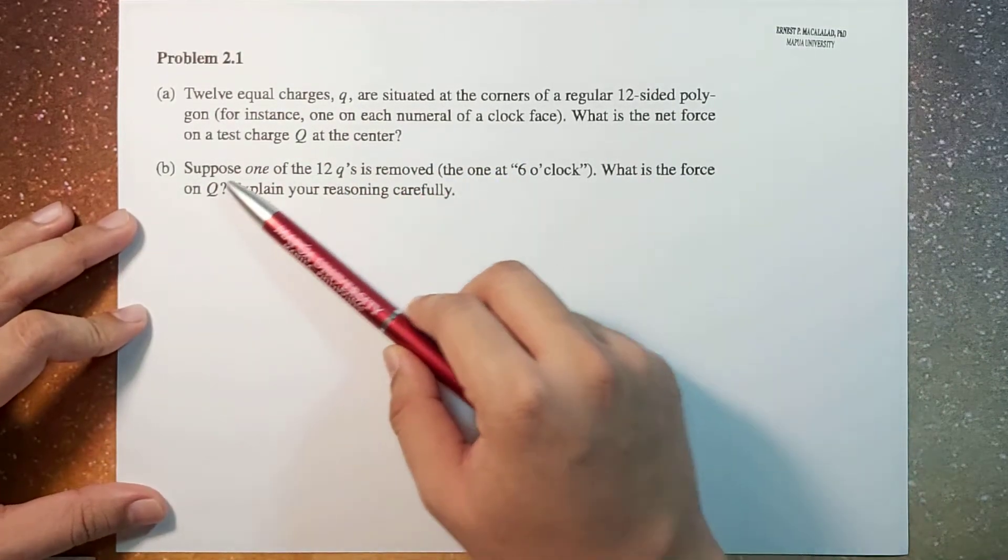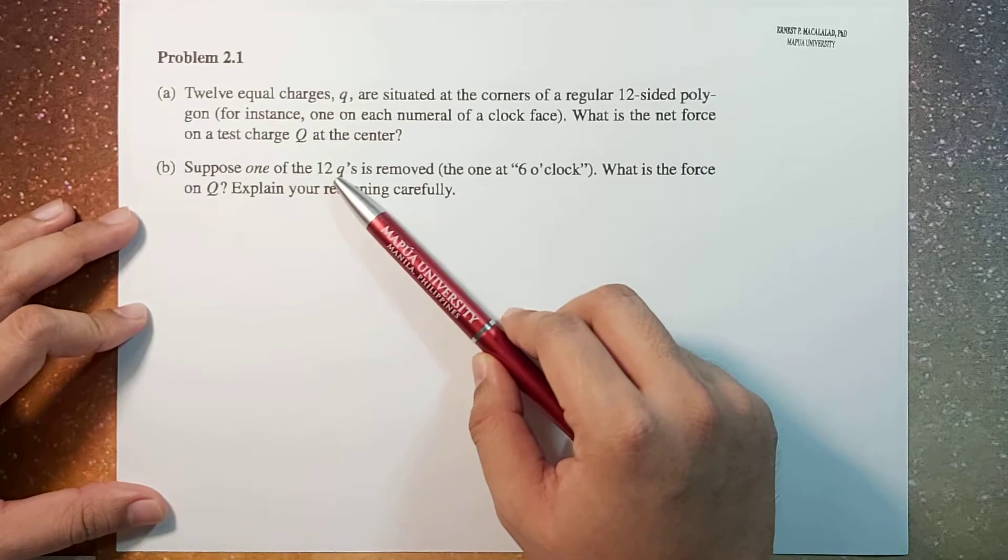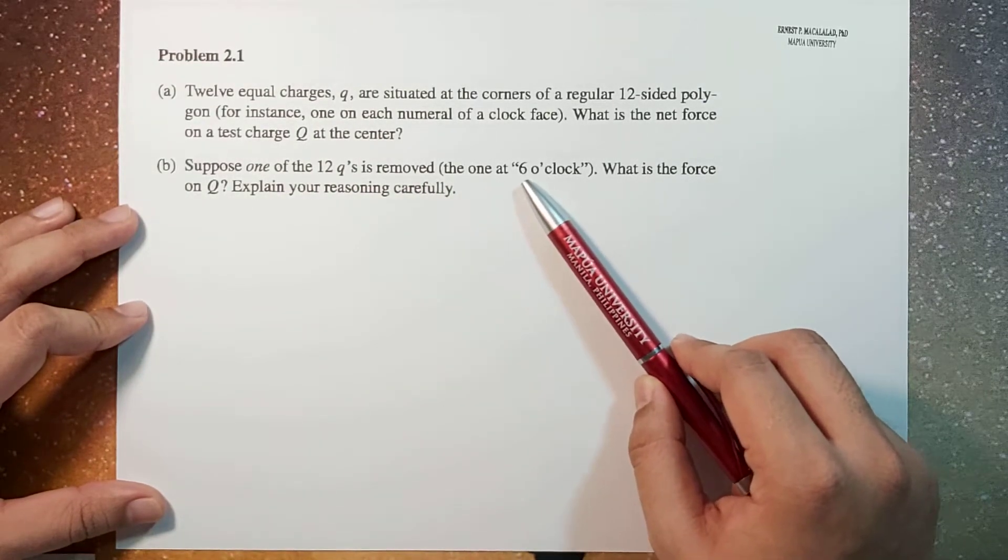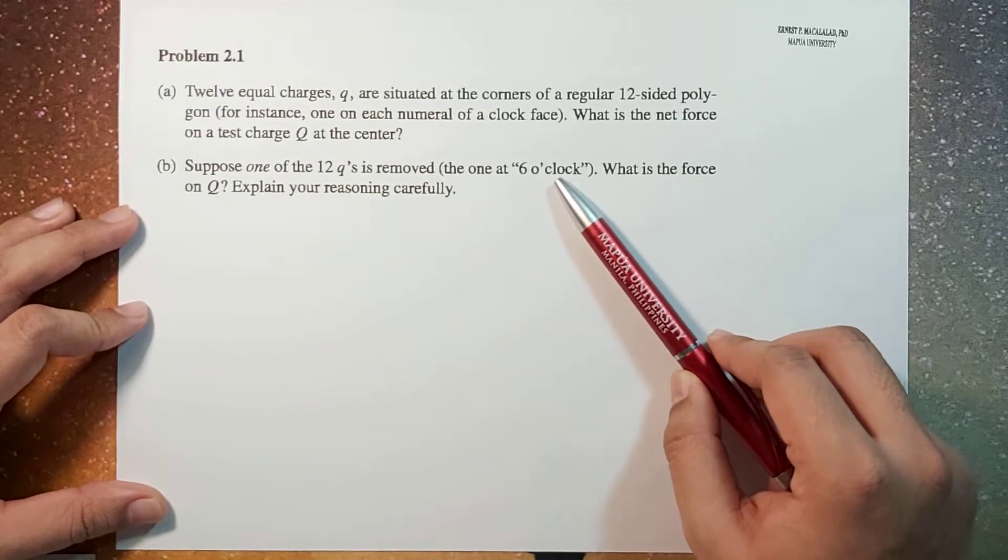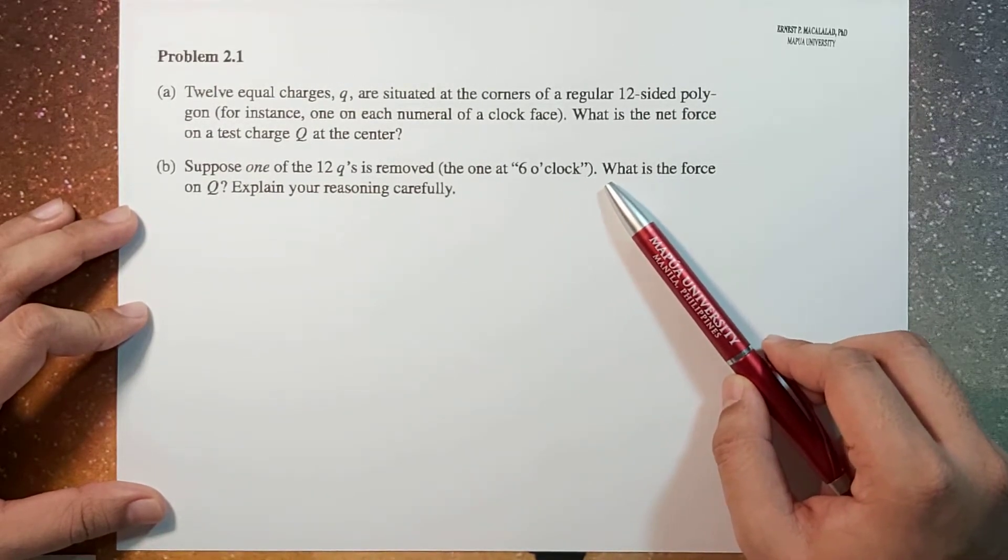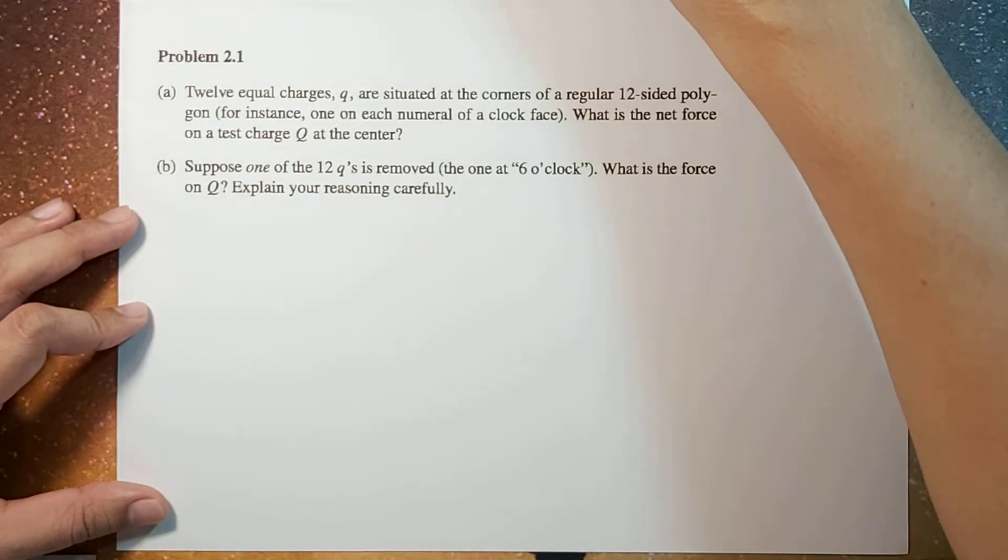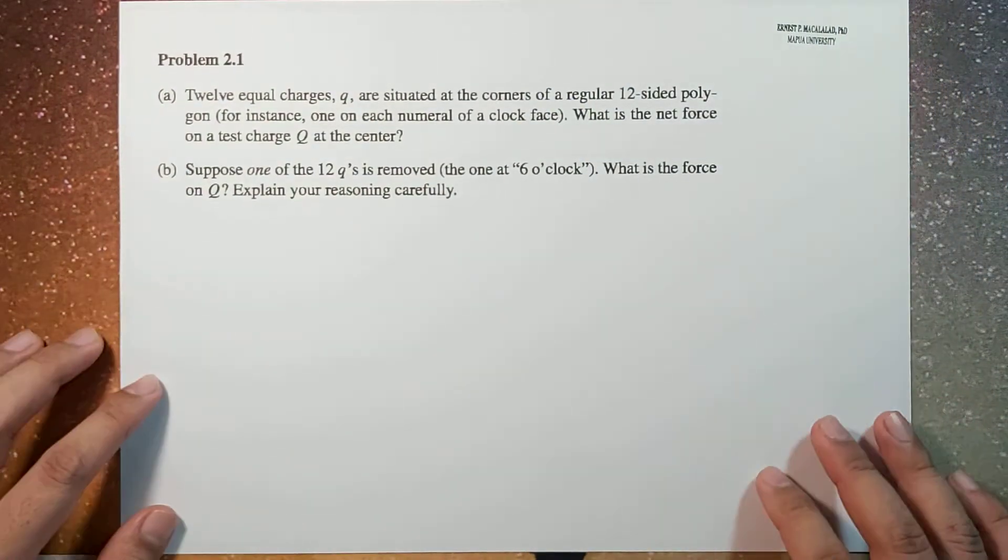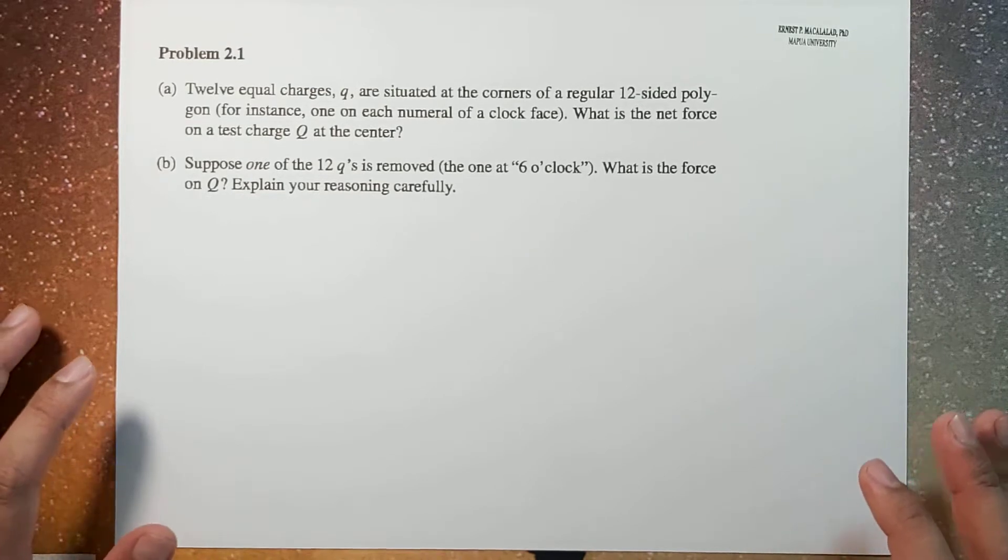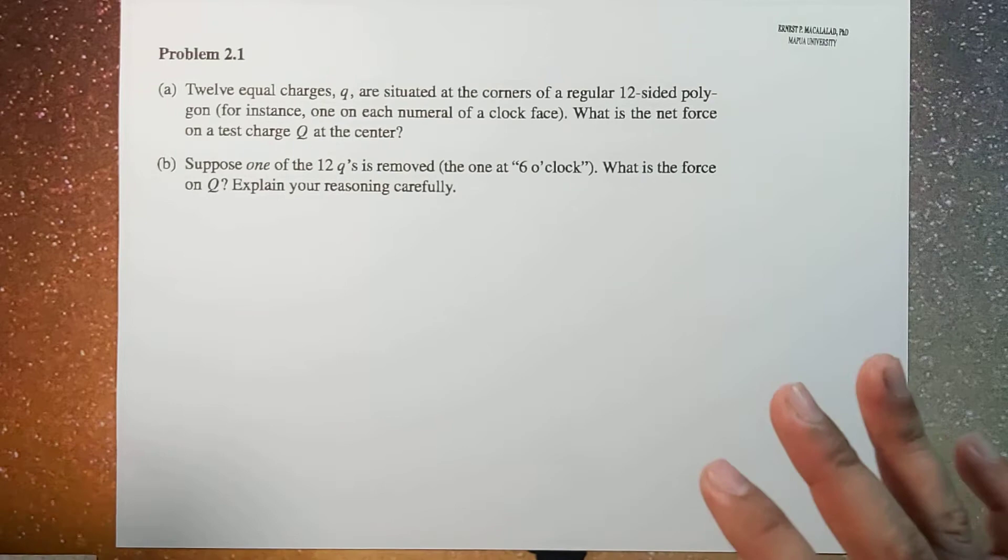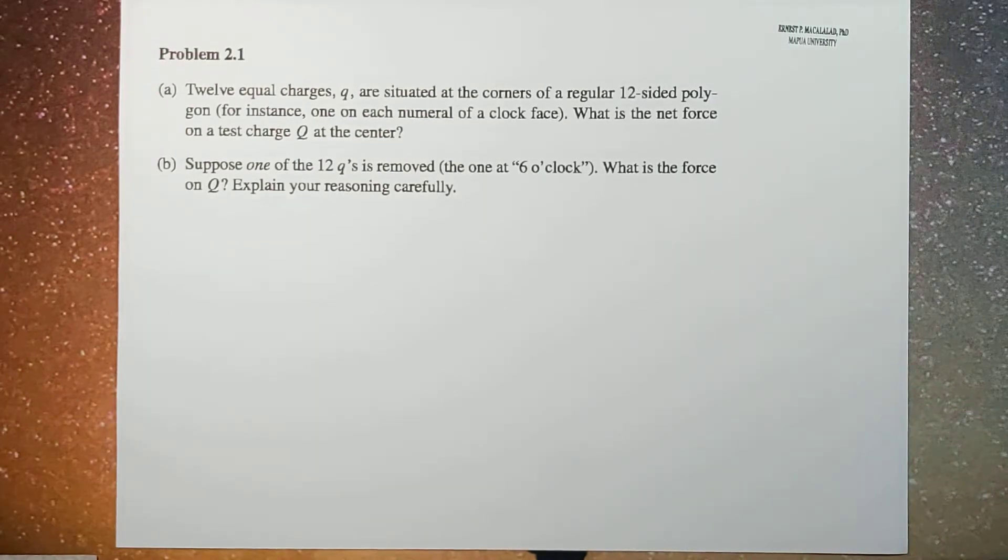And for part b: suppose that one of these 12 q's is removed, let's say the one at the six o'clock marker. What is the force on Q? Explain your reasoning carefully. So Problem 2.1 is a four-part problem, but we're going to focus only on parts a and b in this video.